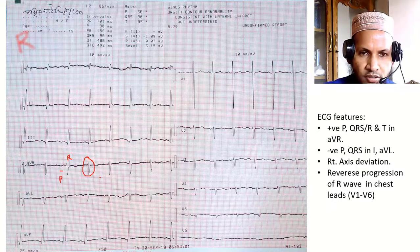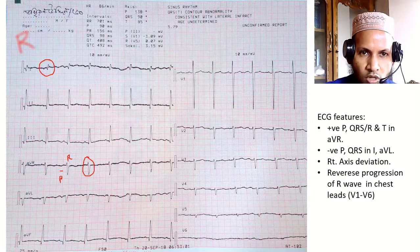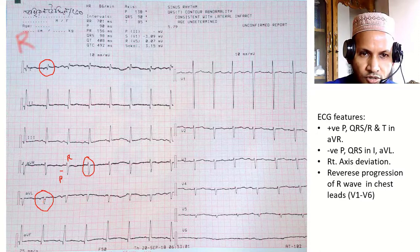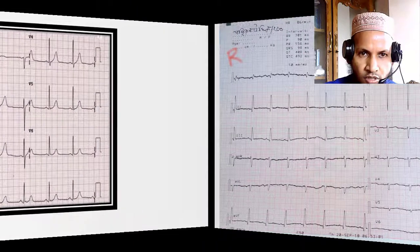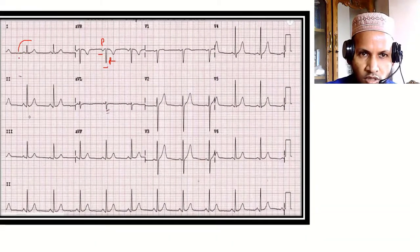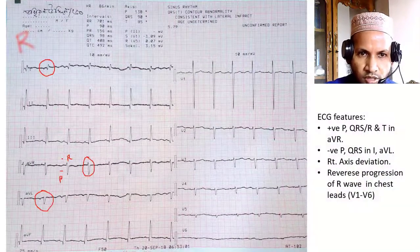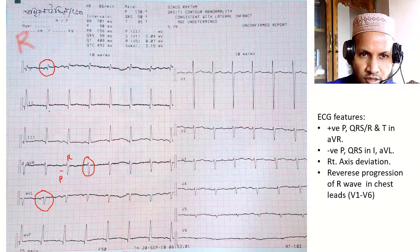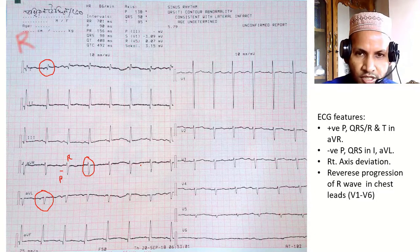To differentiate true dextrocardia from technical dextrocardia, we should look at other features. In lead I and AVL, the P and R waves are negative — this is abnormal. In a normal ECG, lead I and AVL show positive P and R waves. In this ECG they are abnormal in leads I and AVL.